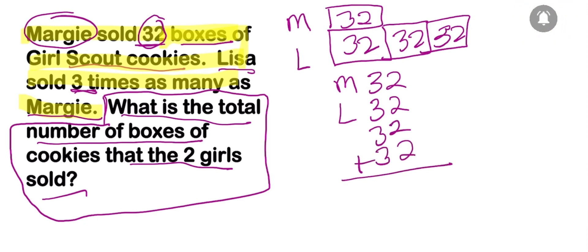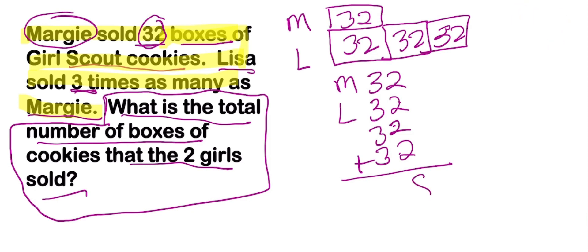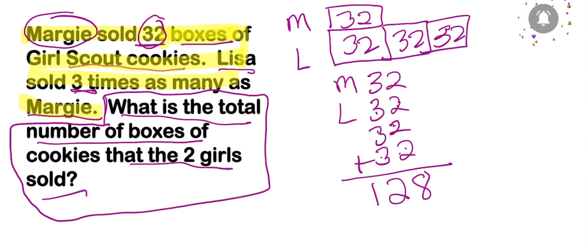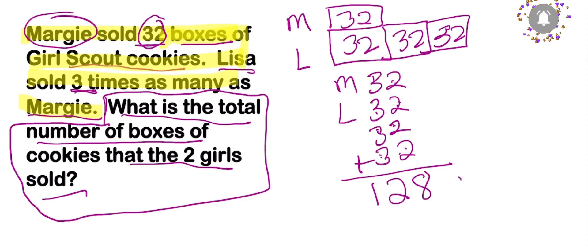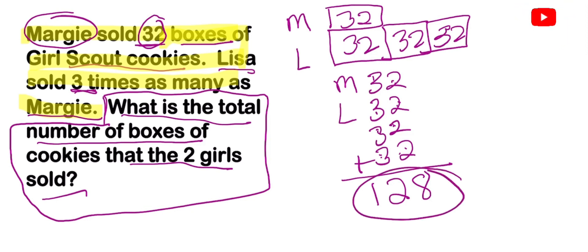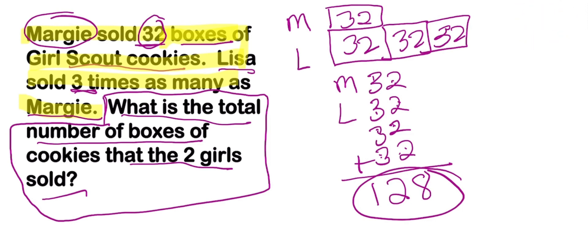Once we add them together, I'm going to skip count because it goes fast: 2, 4, 6, 8 — then 3, 6, 9, 12. All together, both girls sold 128 boxes of cookies. That's what they sold all together.